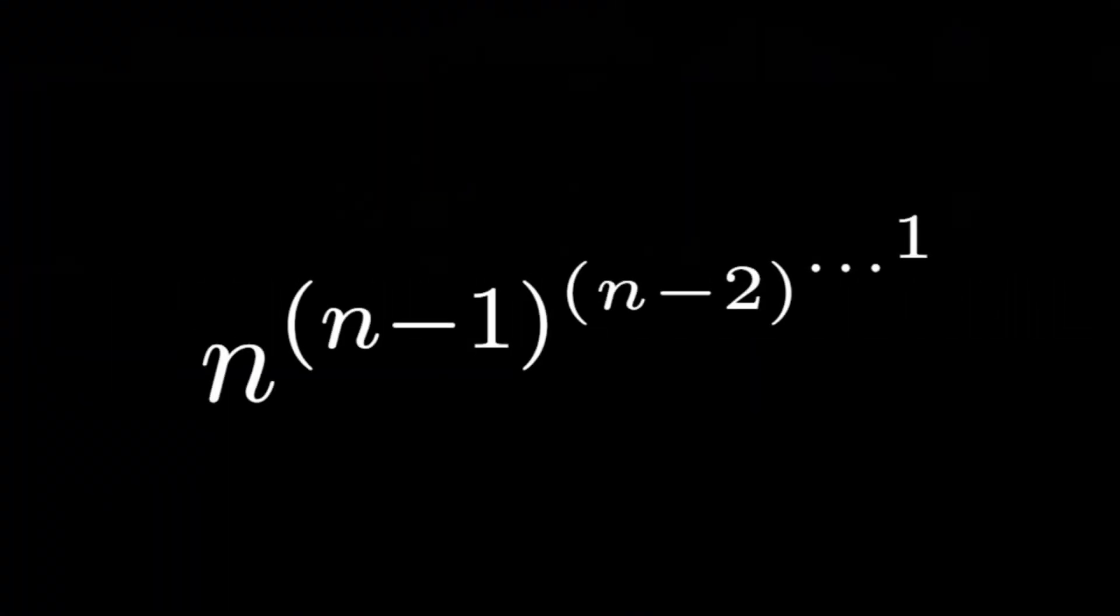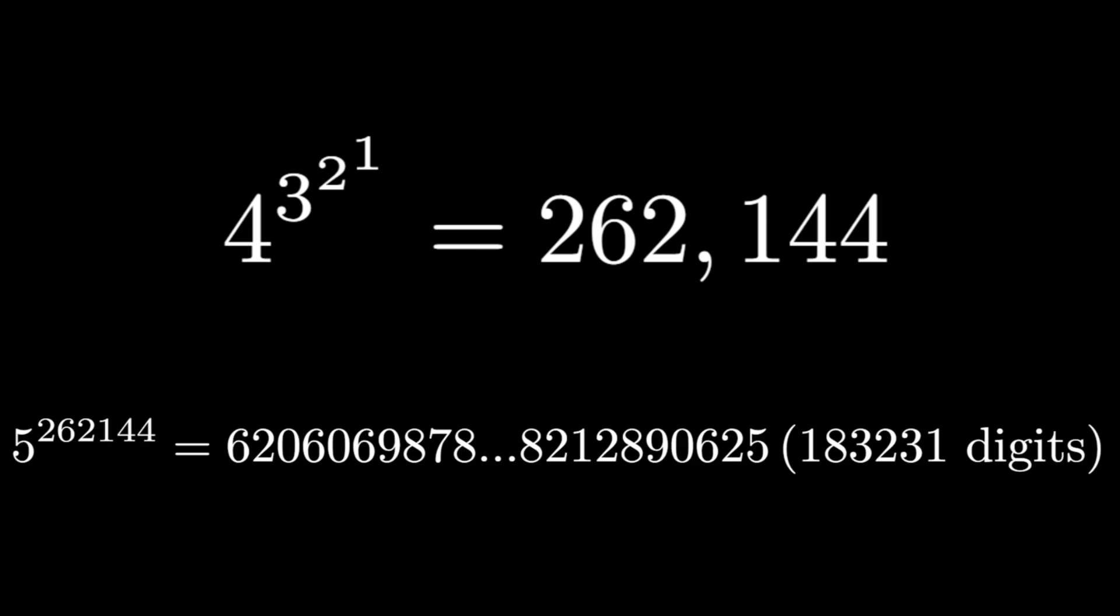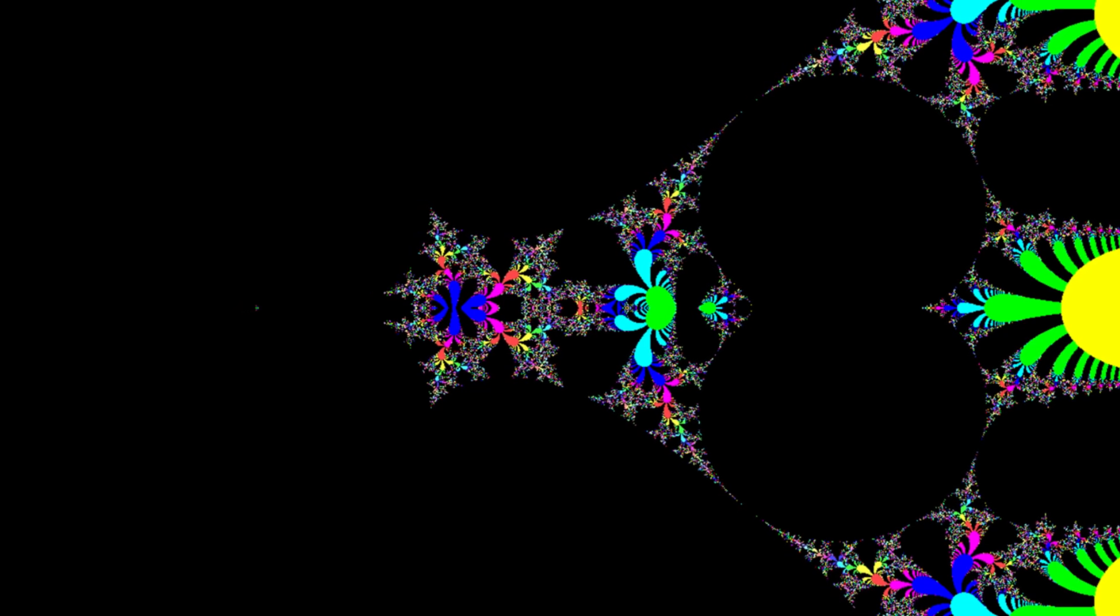This is the exponential factorial of a positive integer n, where n is raised to the power of n minus 1, raised to the power of n minus 2, and so on, all the way down to 1. The sequence of exponential factorials is the fastest growing of all the factorials in this video. Its growth is known as tetrational, which might be an interesting topic for another time.